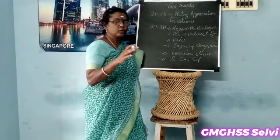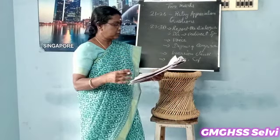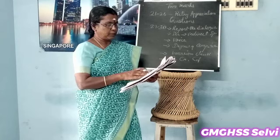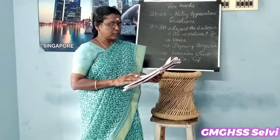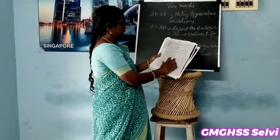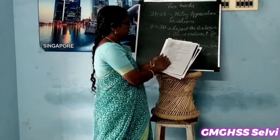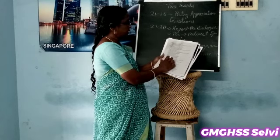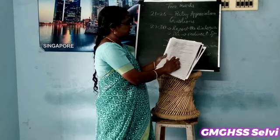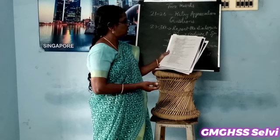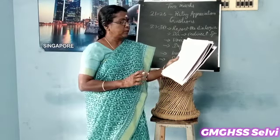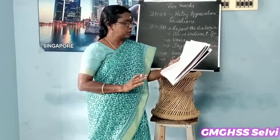Now we are going to discuss four question papers with answers. Question Paper 1, report the dialogue: Tourist asks, 'How can I reach Mahavri?' Guide replies, 'You can take a bus from here.' Tourist asks, 'How long will it take?' Guide replies, 'It will take 2 hours.' Answer: The tourist asked the guide how he could reach Mahavri. The guide replied that he could take a bus from there. The tourist again asked how long it would take to reach there. The guide replied that it would take 2 hours.